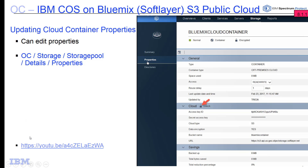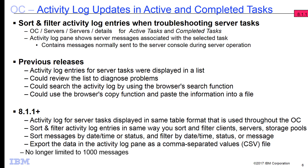If you want to see a demo of creating and working with an IBM Cloud Object Storage off-premise cloud that resides on the Bluemix interface, check out the YouTube video linked here. Another new feature in version 8.1.1 is the ability to sort and filter the activity log entries when you're troubleshooting your server tasks.